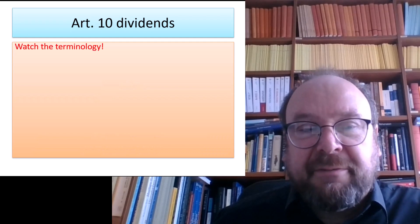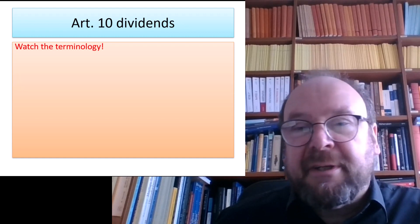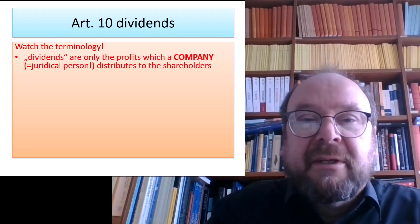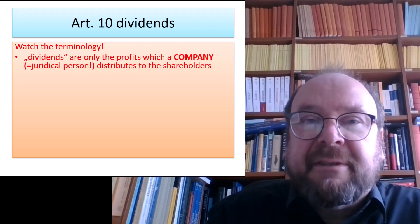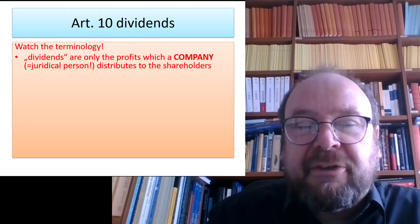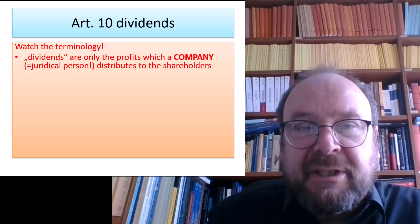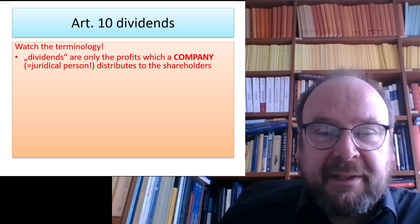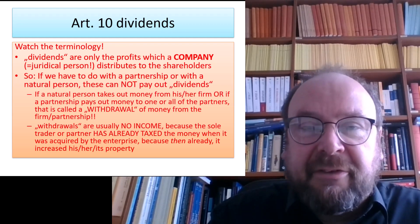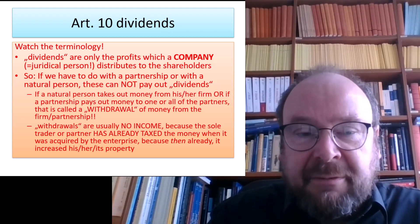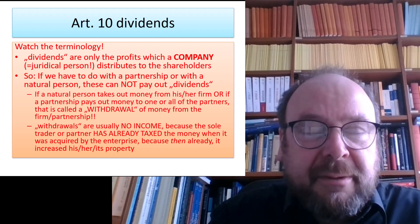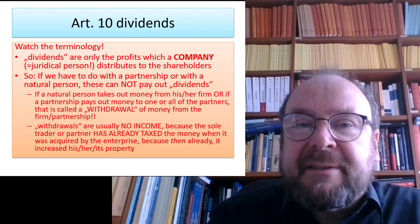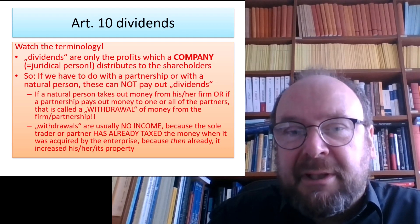Let's begin with a clarification concerning the terminology, because sometimes beginners still mix up what's a dividend and what is something else. Dividends can only exist if we have a company which distributes profits to shareholders — a juridical person, a GmbH, limited company, stock corporation, or similar entity can pay dividends. Whereas partnerships or even sole traderships can by definition never pay out a dividend. If a natural person takes out money from a sole tradership or partnership, this will just be called a withdrawal of money from the firm or partnership, and such withdrawals are usually no income at all because the sole trader or partner has already taxed the money.